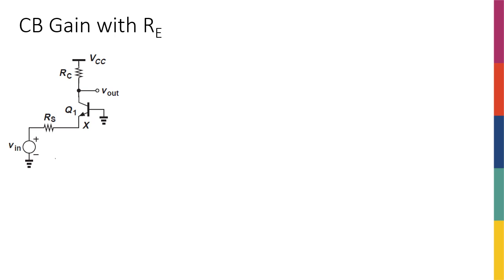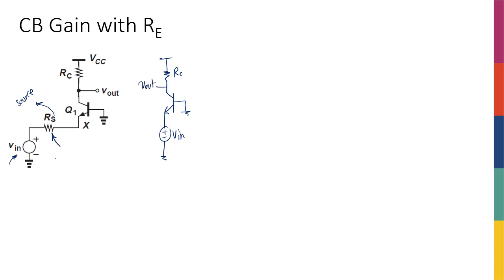Now that we have discussed the R_in and R_out, we have to go back to the gain discussions, because the gain of the CB stage would change if you have some resistance at the emitter side. The gain of this circuit was V_out over V_in equal to GM·RC. That's one of the first things we calculated for common base amplifiers.